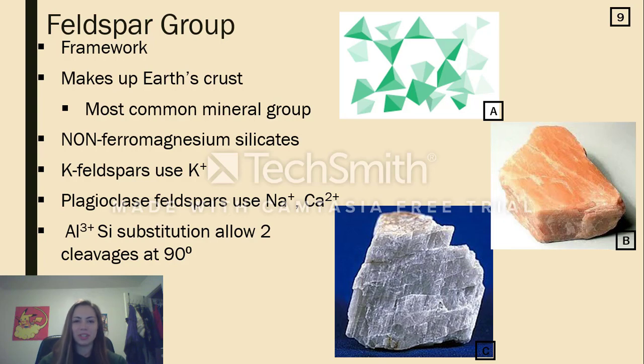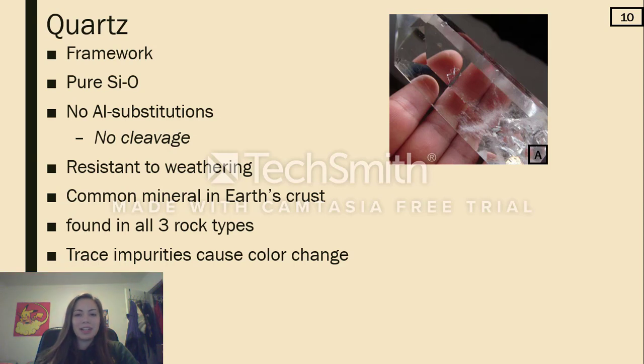Like micas, feldspars experience those charge imbalances when aluminum replaces the central silicon atom. That aluminum substitution is key here, because although feldspars have the most complex tetrahedral structure, making them very stable, the aluminum substitution, and therefore those weak bonds, allows two strong 90-degree cleavages in between each feldspar.